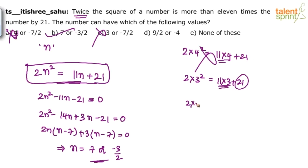Suppose you go by option B, what happens? 2 into 7 square equals to 11 into 7 plus 21. So check 49, 49 into 2 is 98. This is 77. 77 plus 21, 98. Balanced. So first part satisfies. Now just because the first part has satisfied, you cannot mark option B as answer. You have to verify the second value as well.